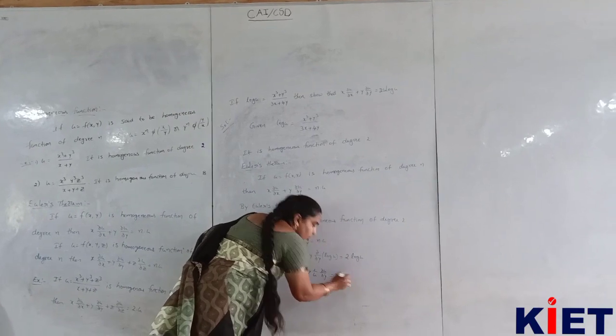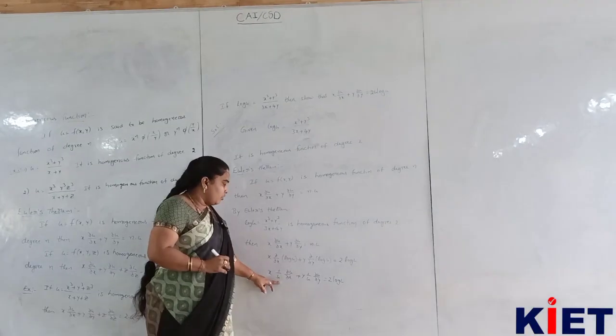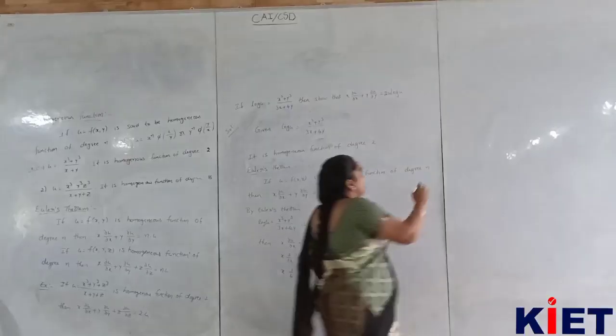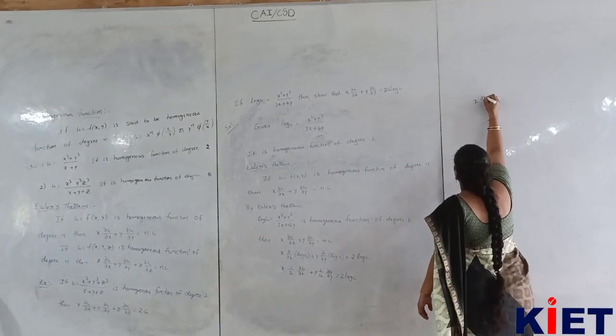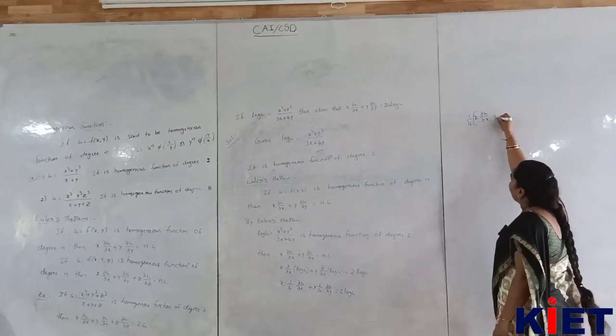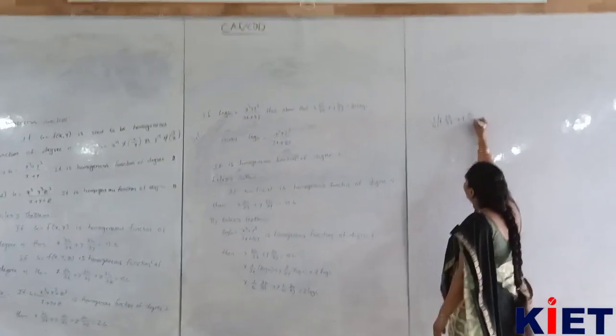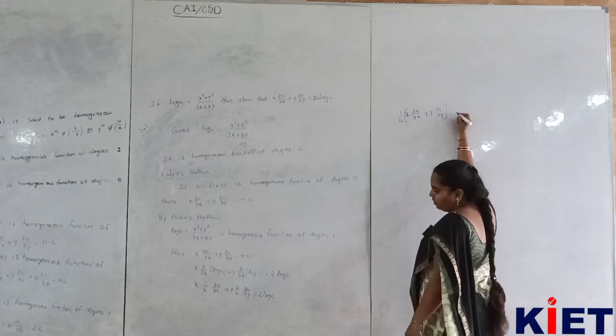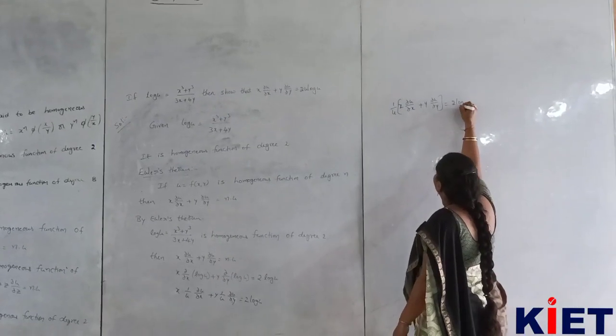1 by u and here 1 by u common thies. x into ∂u/∂x, 1 by u into x ∂u/∂x plus y into ∂u/∂y is 2 log u.